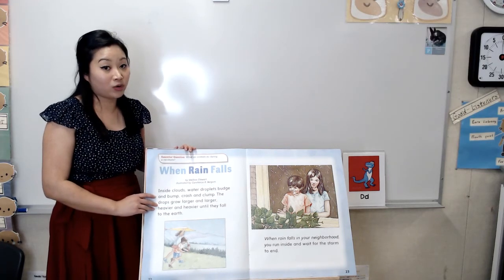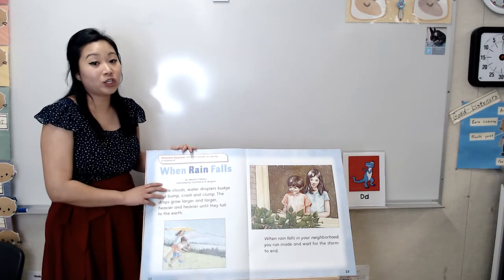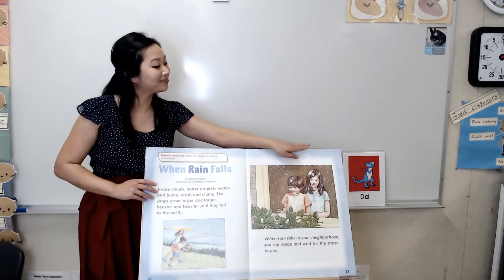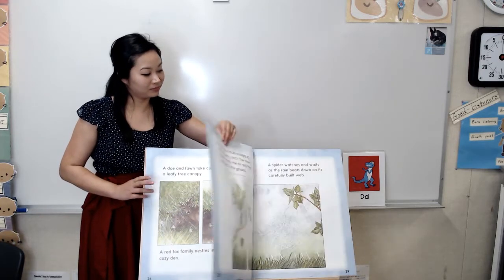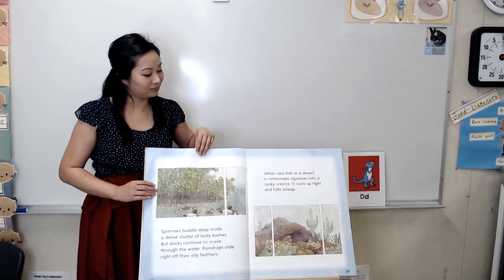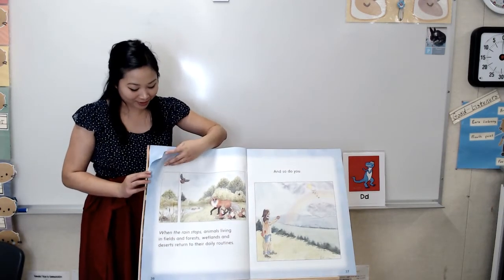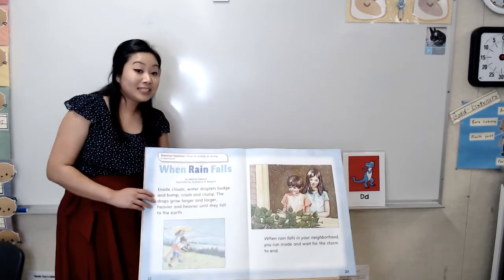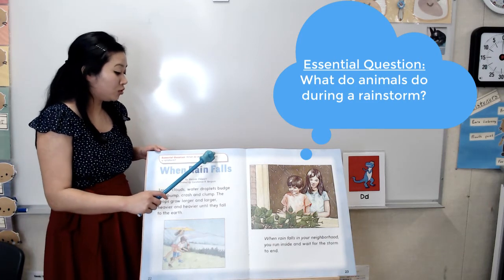Before we start, we're going to do a picture walk. While we're doing our picture walk, I want you to look at the pictures and make some observations — what do you see, what's happening on each page? And that's the end of our story. Now that we have previewed our book, let's get ready to read. The essential question I want you to think about as we read this story is: What do animals do during a rainstorm?